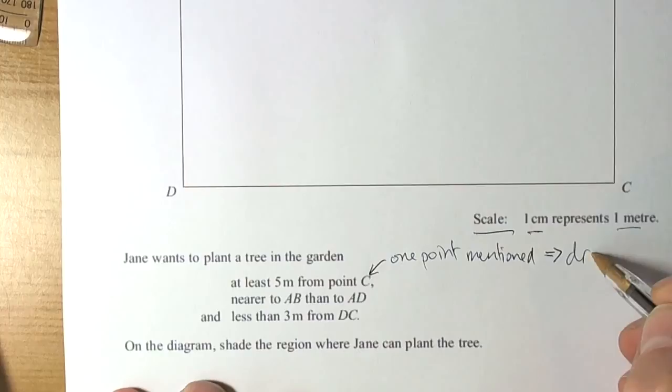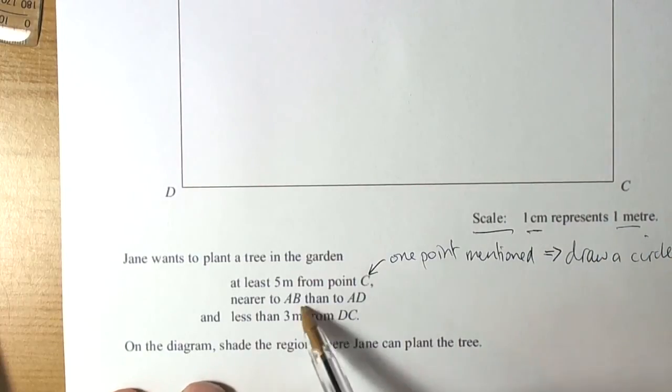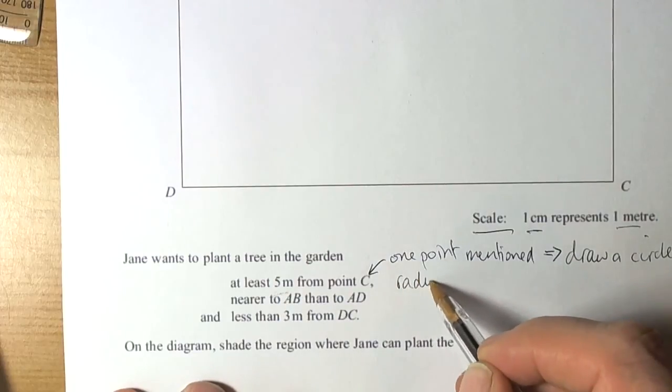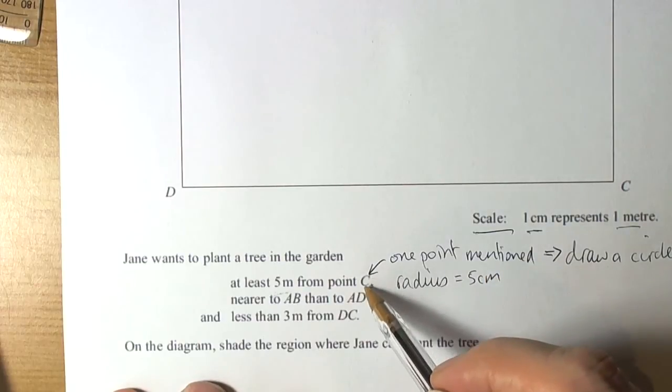Because they're telling us it's five metres, then the radius of that circle is going to equal five centimetres. And it's from the point C.